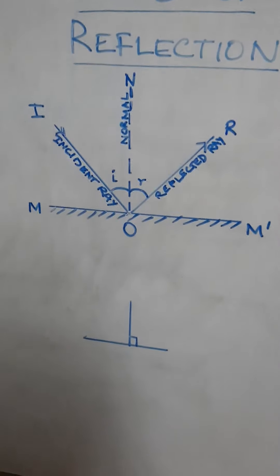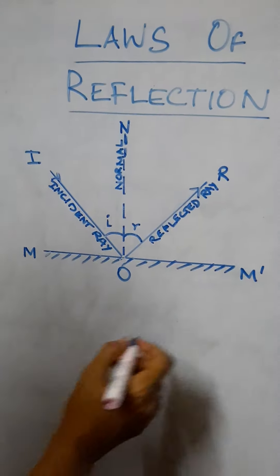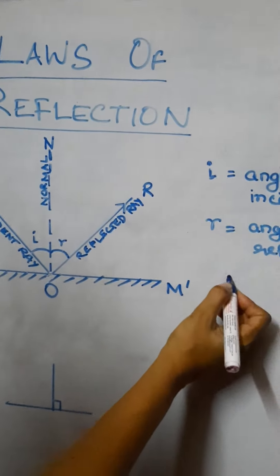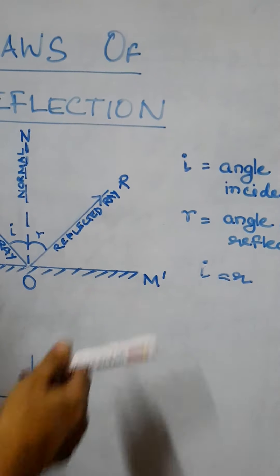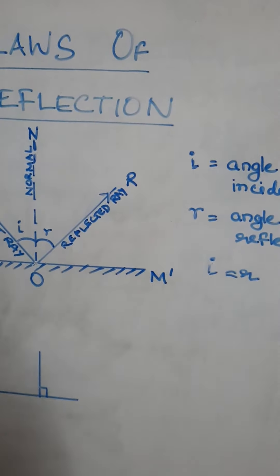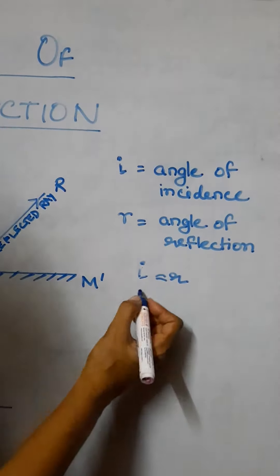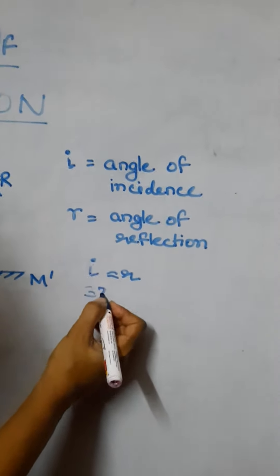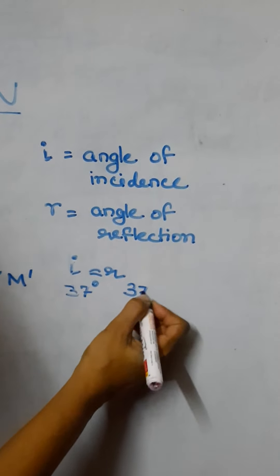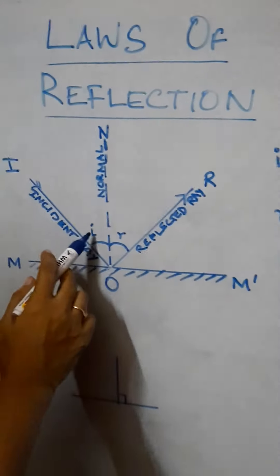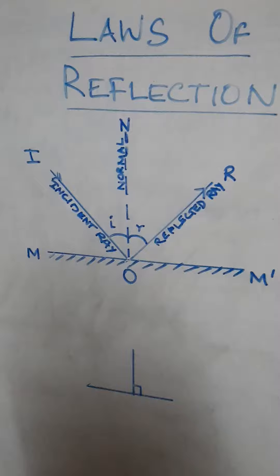Second law tells us that angle I equals angle R. Angle I is the angle of incidence, angle R is the angle of reflection. So if I is 37 degrees, R will also be 37 degrees. So whatever be the measurement of angle I, angle R will have the same measurement.